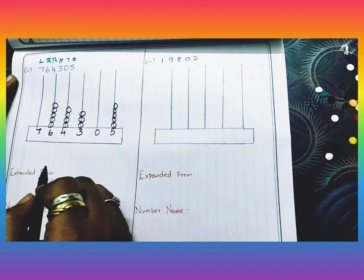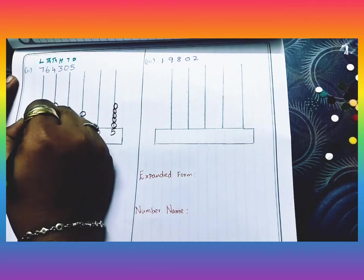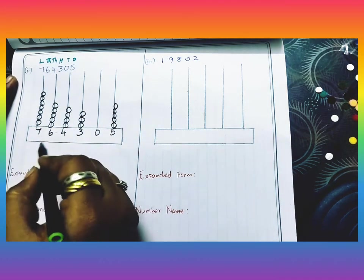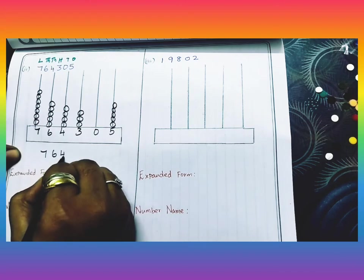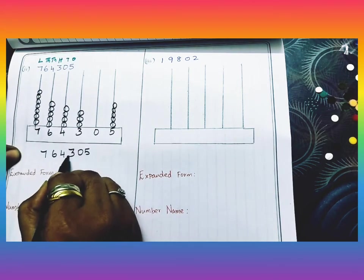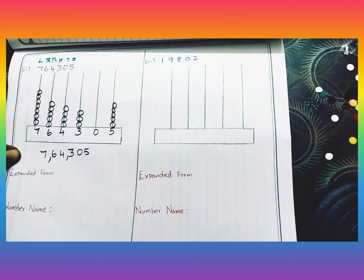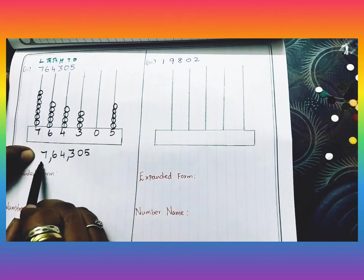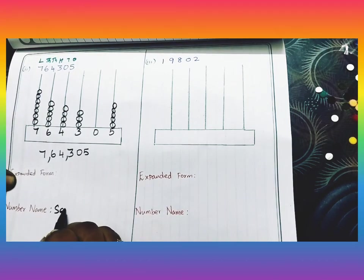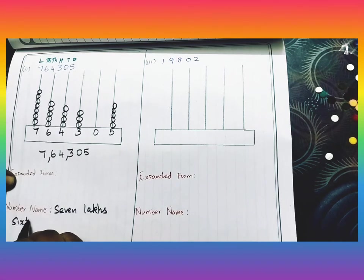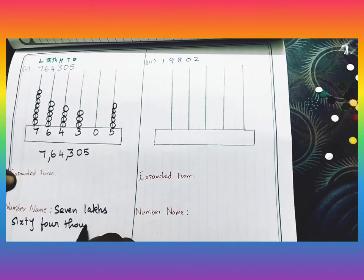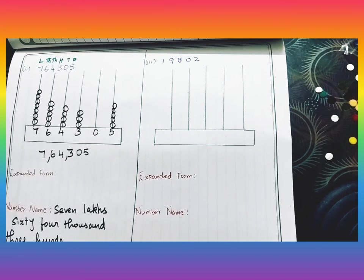Seven lakhs — stick seven bindis there; don't leave a gap between the beads. The number is 7 6 4 3 0 5. From the right side, the first three digits, then insert a comma after every two digits. The sixth digit is seven lakhs. Reading together: seven lakh sixty-four thousand three hundred and five.